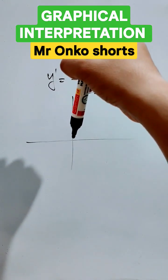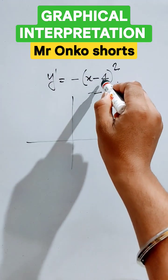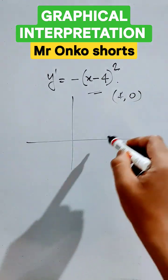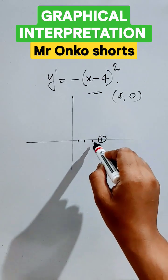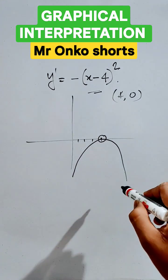So the open mouth will be downward of the parabola, and the vertex is at four comma zero. Counting: one, two, three, four. Here will be the vertex of the given parabola, and this will be the graph of the given equation.